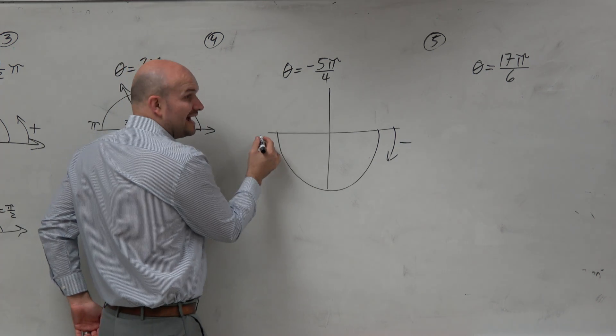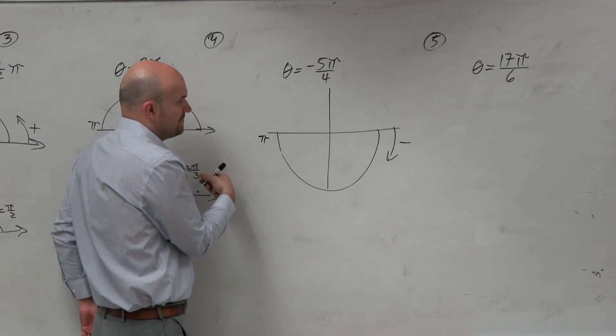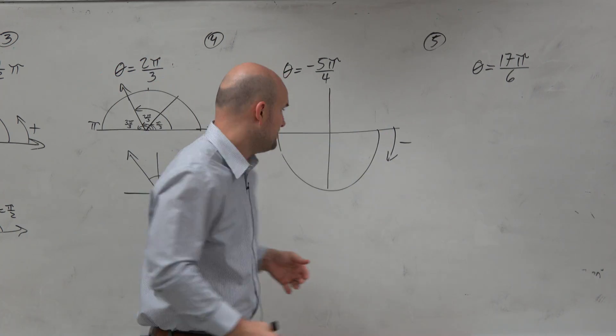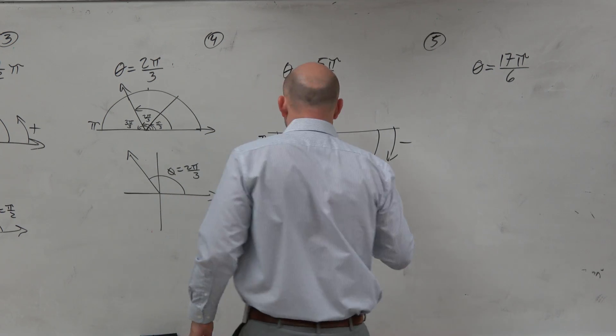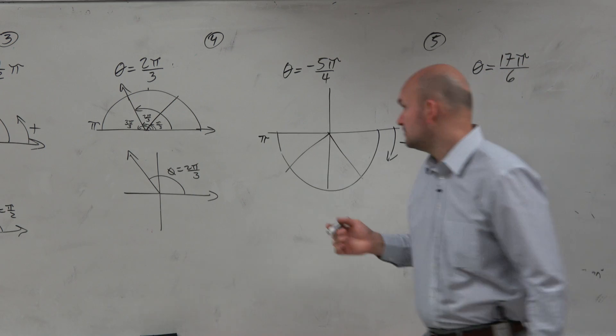From there to there is pi, right? It's just in the negative direction. So I'm just going to represent pi, and I can represent four pi. Now, if I'm breaking something up into fourths, how many fourths make up pi? Four, right? Four pi over four.